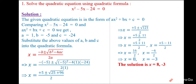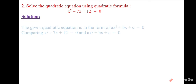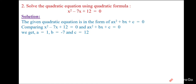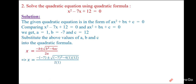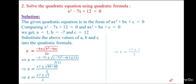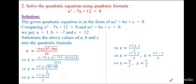Another question: comparing gives a = 1, b = −7, c = 12. Substituting in the formula: x = (7 ± √(49 − 48)) / 2 = (7 ± √1) / 2 = (7 ± 1) / 2. Positive: (7 + 1)/2 = 8/2 = 4. Negative: (7 − 1)/2 = 6/2 = 3. So 4 and 3 are the solutions of the given quadratic equation.